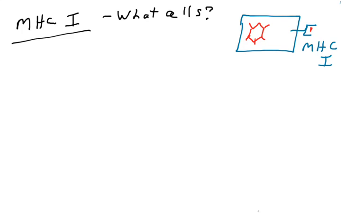So the question is, which cells? Because for MHC1 and MHC2, these receptors are found on different cells. And the answer is, MHC1 is found on the surface of most cells in the body.